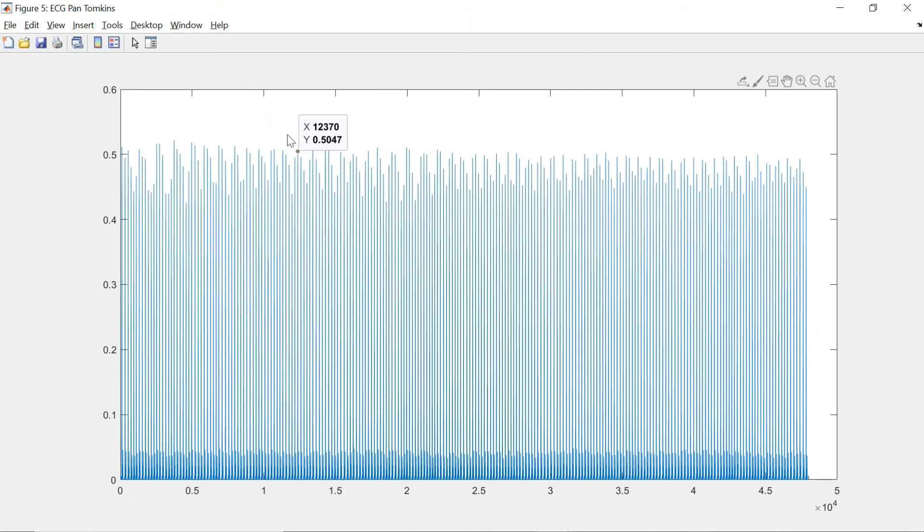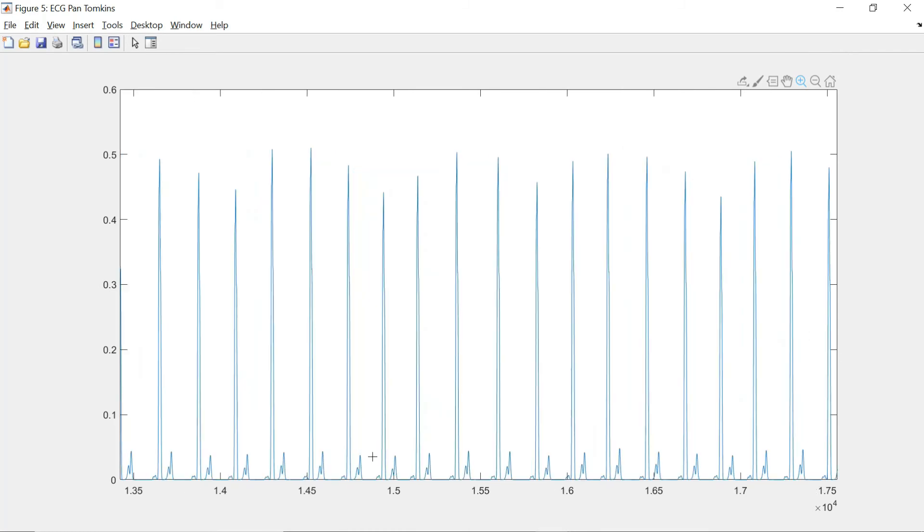The result of our Pan-Tompkins algorithm gives us this strange-looking curve. We can just maximize a little portion of it to see what we have gotten. This is only the QRS lines, so we can get the Q points, the R which is the peak, and then again the bottom which is S.